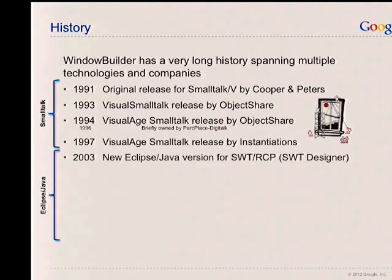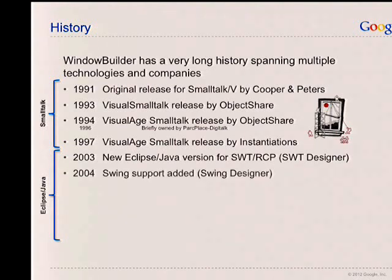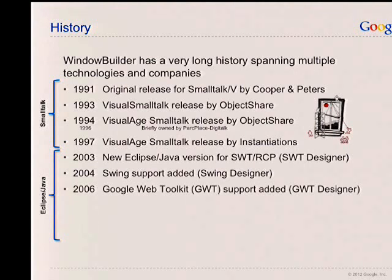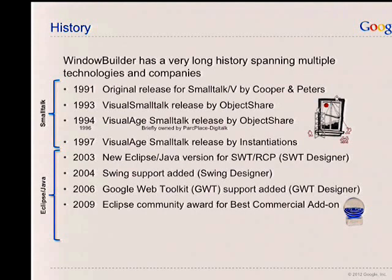In 2003, the first Eclipse Java version came out, focused on SWT — we called that SWT Designer. We added Swing Designer or Swing support a year later, and that formed the original Window Builder product. In 2006, we were rather fortunate to run across Google's GWT and do a version of Window Builder for that called GWT Designer. That was actually the product that caused Google to acquire us in the end.